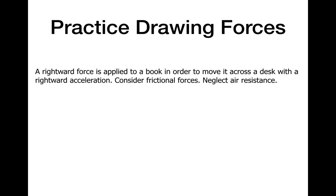Next one: I have a rightward force applied to a book to move it across a desk with a rightward acceleration, so accelerating - that means the forces are unbalanced. Consider frictional forces, neglect air resistance. Here's the answer. I have my normal force and gravitation are equal - normal force is holding the book up on the desk, gravity is pulling it down, and because the book is not moving up or down, these two forces are equal. It says a rightward acceleration, so the applied force is to the right and the arrow here is bigger than the force of friction on the left.